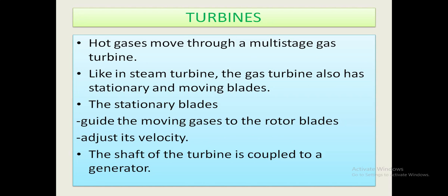Turbine: hot gases move through a multi-stage gas turbine. Like in a steam turbine, the gas turbine also has stationary and moving blades. The stationary blades guide the moving gases to the rotor blades and adjust their velocity. The shaft of the turbine is coupled to a generator.